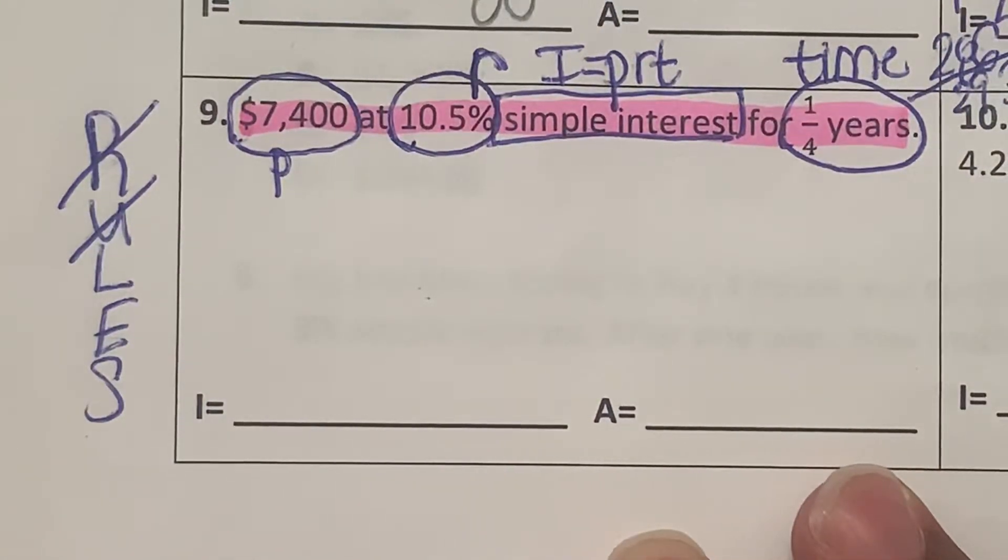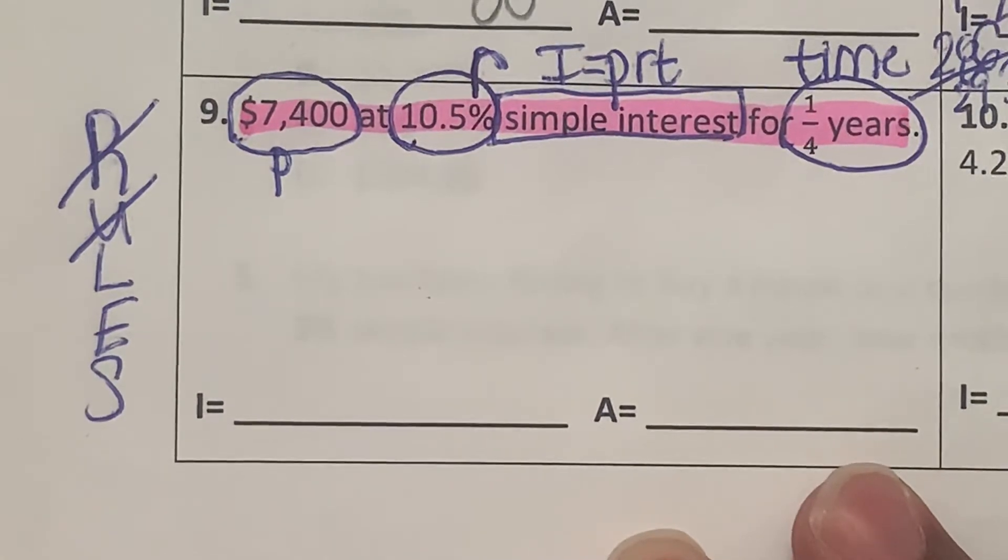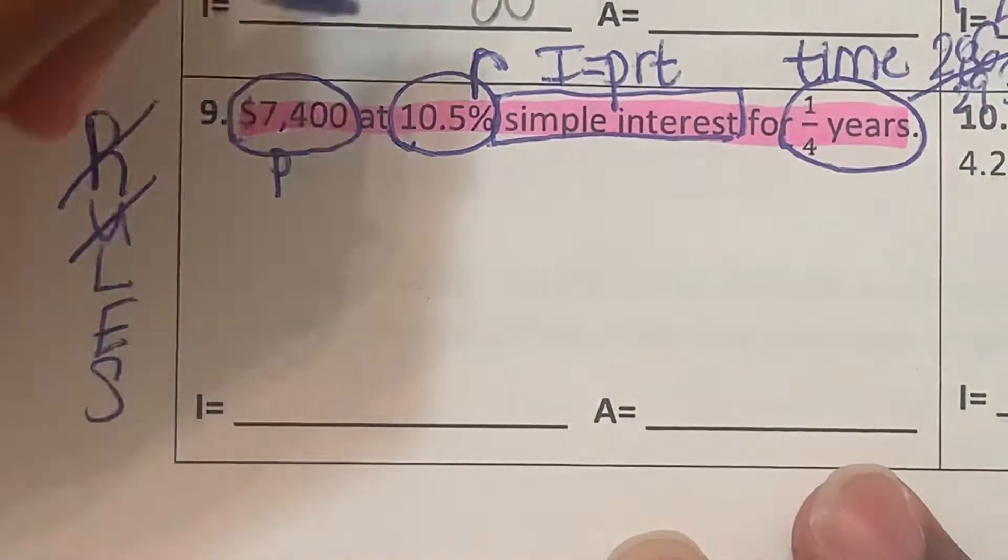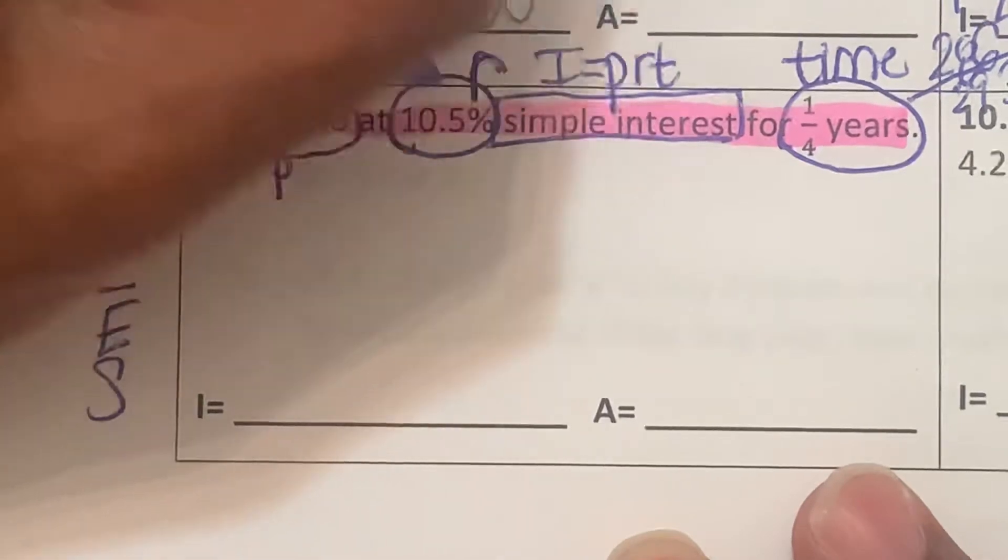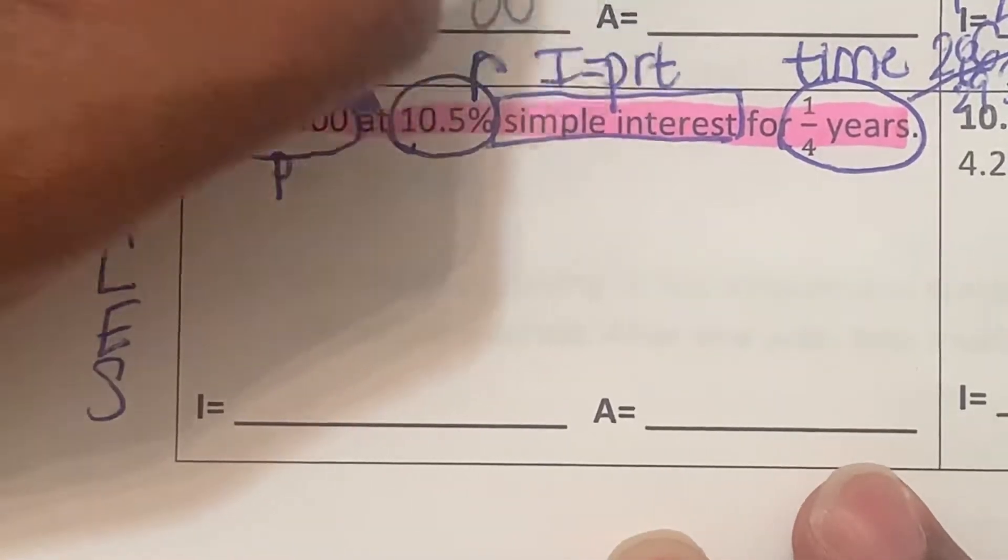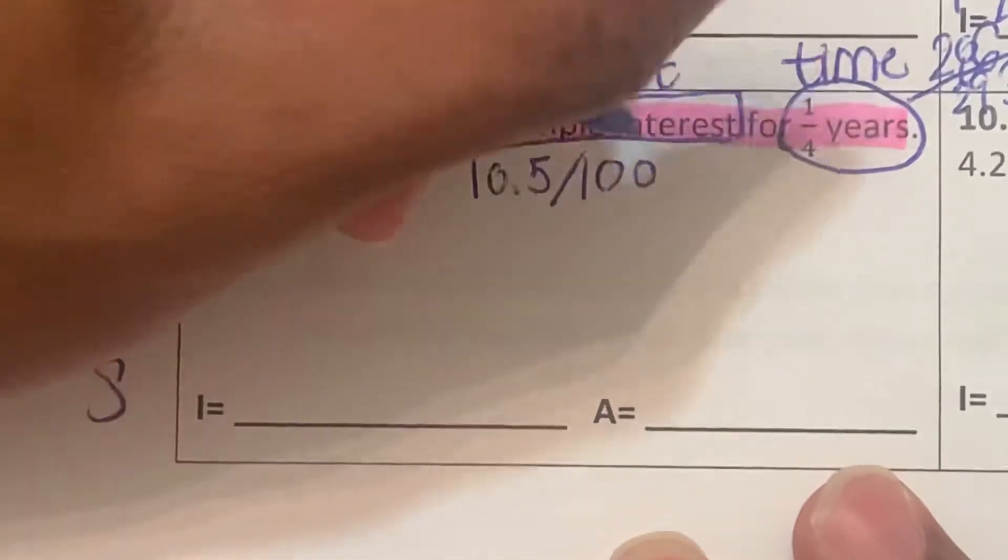It is one-fourth years. Now let's convert the 10.5%. Remember we have to divide this by 100, which means that we're going to move the decimal towards the left.